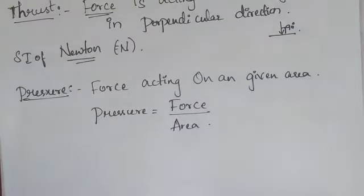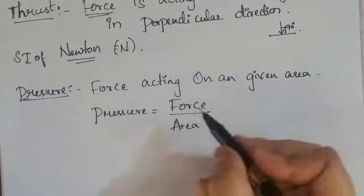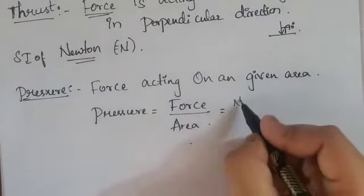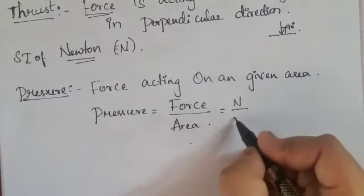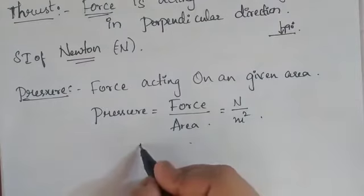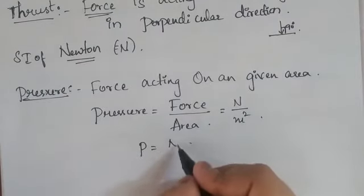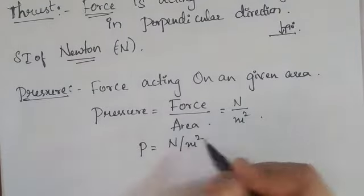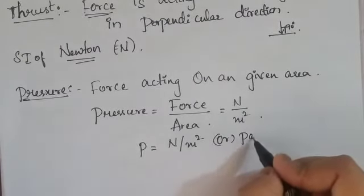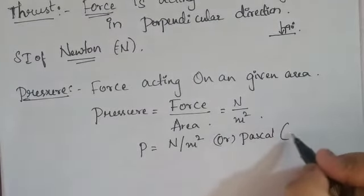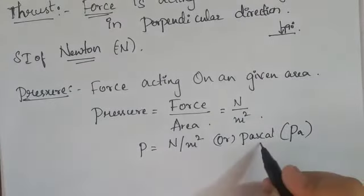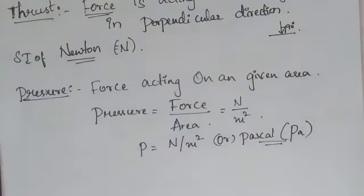What is the unit of pressure? Since pressure equals force divided by area, the unit of force is Newton and the unit of area is meter square. So pressure equals Newton per meter square. Another way to express this unit is Pascal, which we represent as capital P and small a — that is the SI unit of pressure.